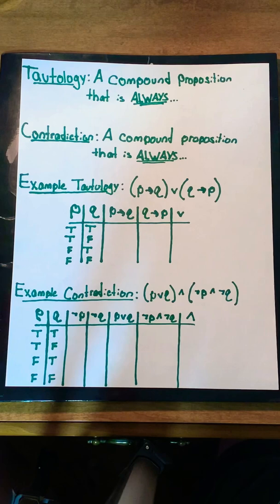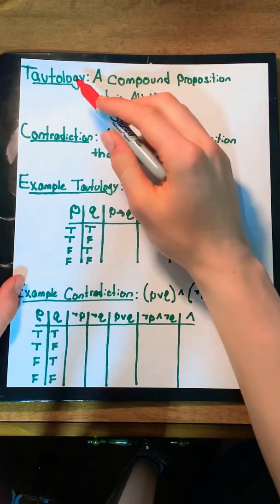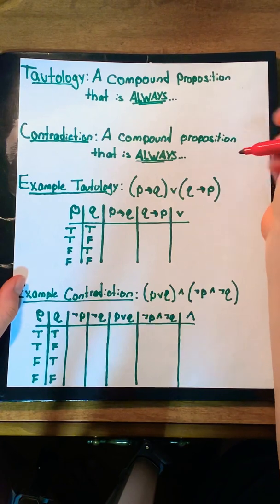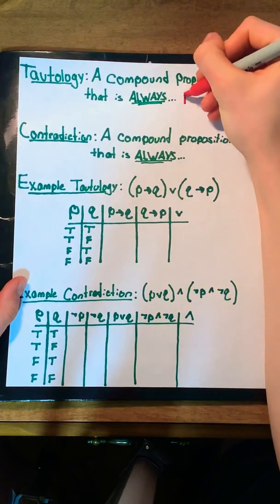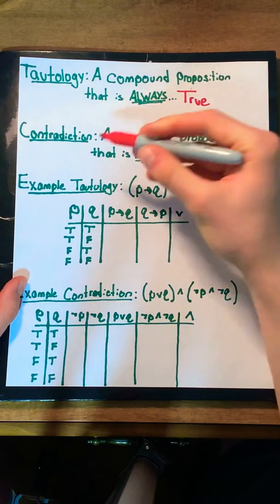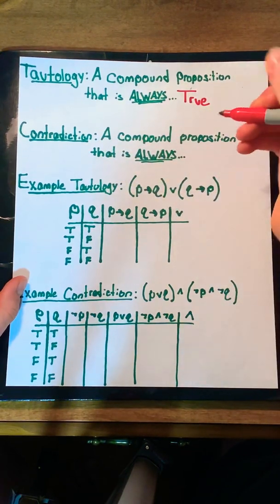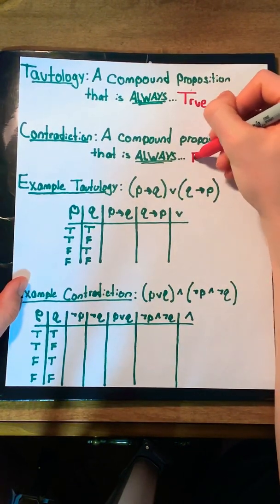Let's start with tautologies and contradictions, and specifically, let's give them some definitions. A tautology is a compound proposition that is always true, whereas a contradiction is a compound proposition that is always false.